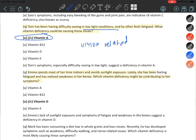Tom has been having difficulty seeing in low light conditions - vision-related issues are vitamin A deficiencies. Emma spends most of her time indoors and avoids sunlight exposure. Lately she has been feeling fatigued and noticed weakness in her bones. Parents often say drink milk because it has vitamin D and calcium. Vitamin D comes from sunlight, especially morning sunlight. Emma is avoiding that, so she has vitamin D deficiency, which you can address by drinking milk.